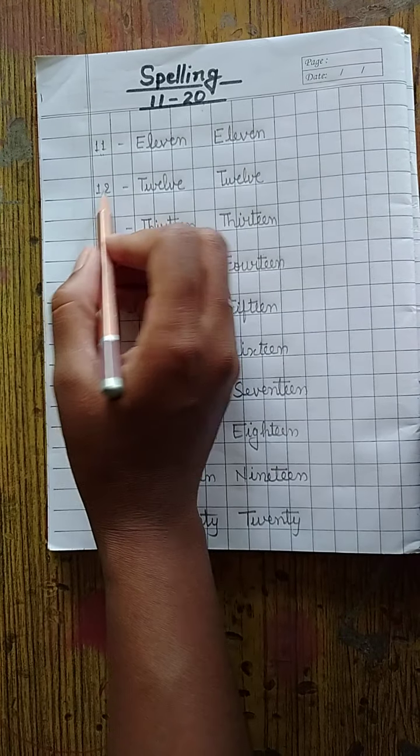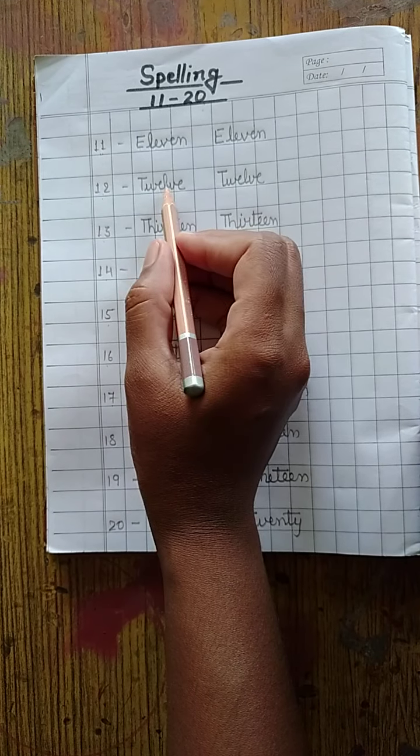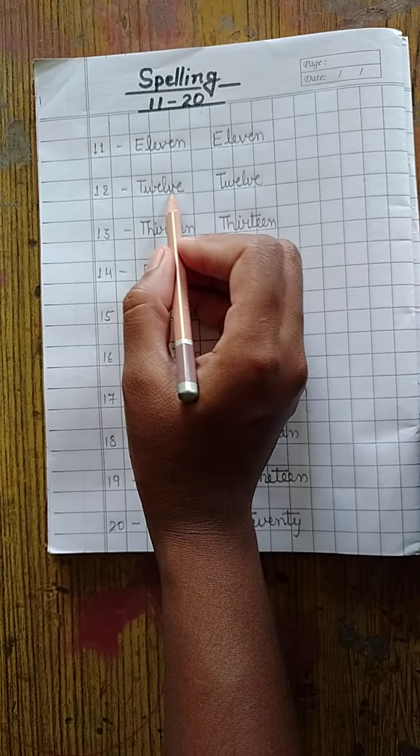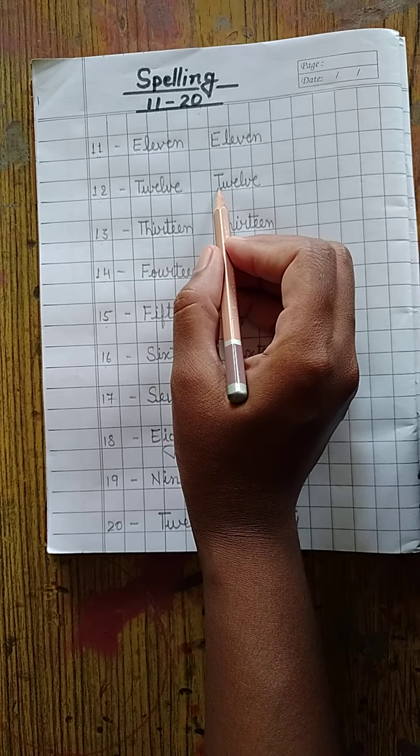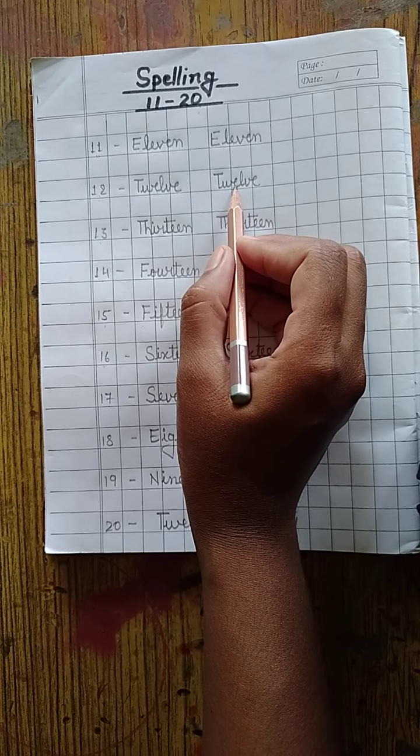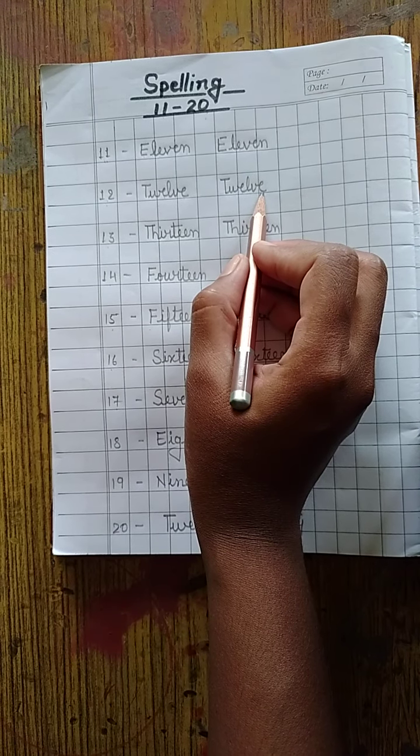Now next. 12. T W E L V E. 12. Once again. T W E L V E. 12.